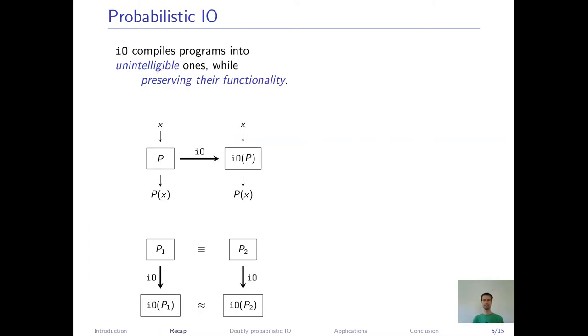Okay, let's define probabilistic I.O. Normal I.O. takes a deterministic program and compiles it into an unintelligible one with the same input-output behavior. In this context, unintelligible means that if two programs, p1 and p2, behave identically, then their obfuscations are guaranteed to be indistinguishable.